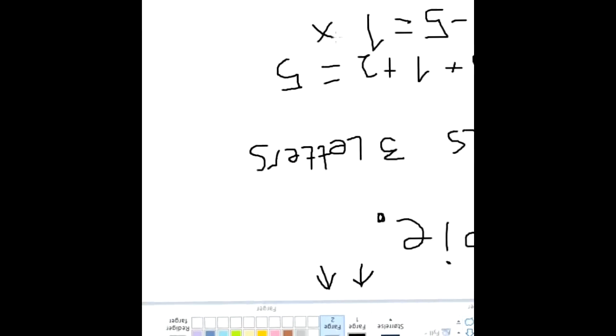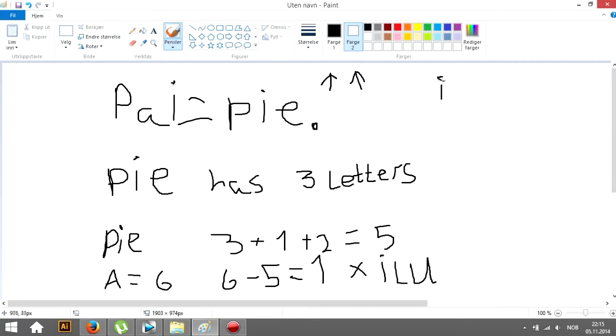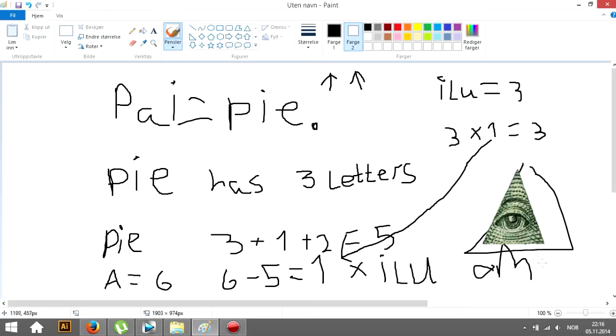Illuminati. Five equals six. I, L, U equals three. Three times one equals three. Illuminati has three sides. Illuminati is confirmed. No! I, L, U. We each have three.